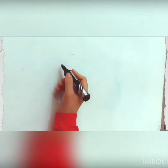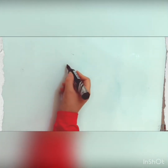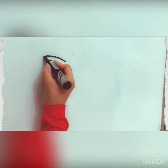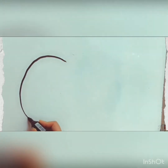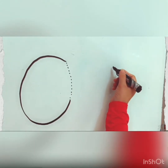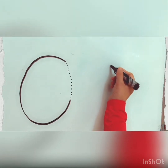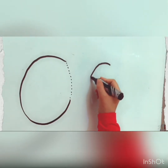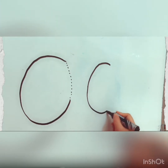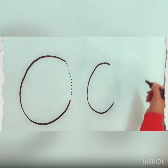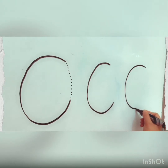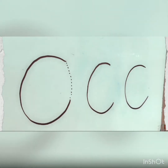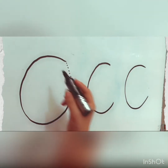Hey children, now we will write letter C together. We just make a curve — look at my hand. We will just make a curve. Very good, excellent! Write with your finger, with your pencil, with your markers, whatever you have.